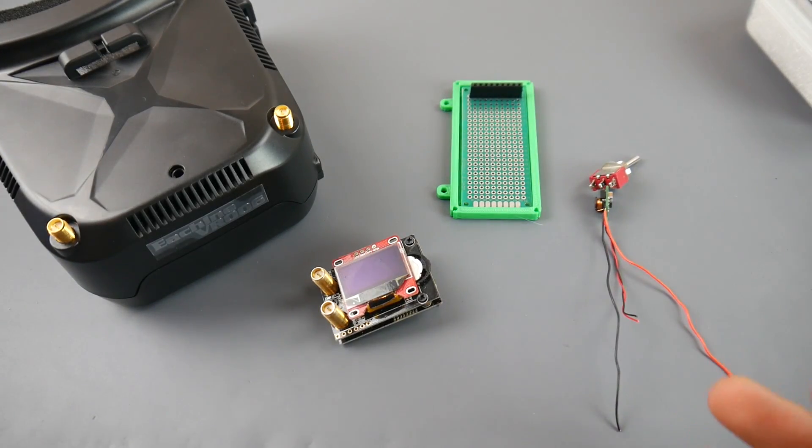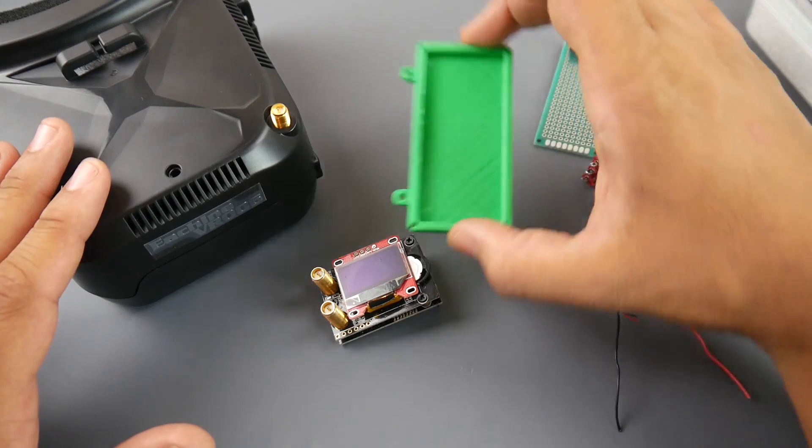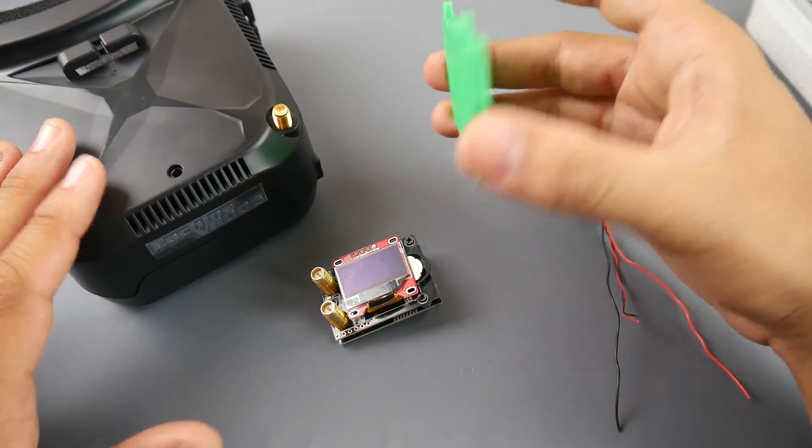Now also, before we begin, some of the components that we're going to need is an Eosin VR006. Hopefully you have a 3D printer because currently I'm printing the enclosure for this.